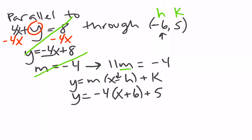Distribute and combine like terms. So that's negative 4x minus 24 plus 5. And negative 24 plus 5 would be negative 19.